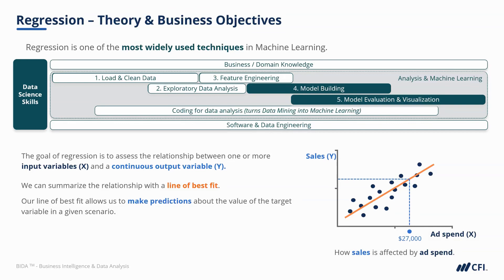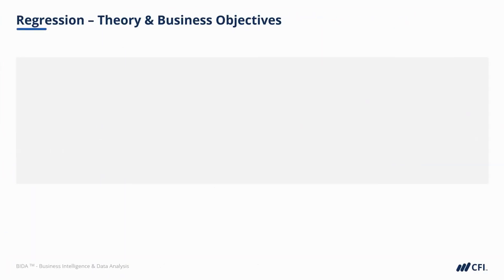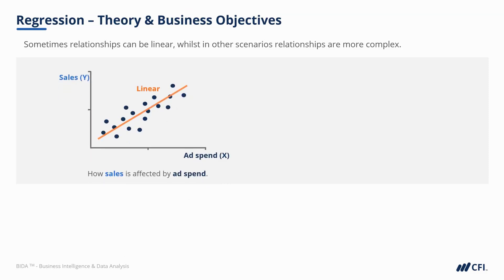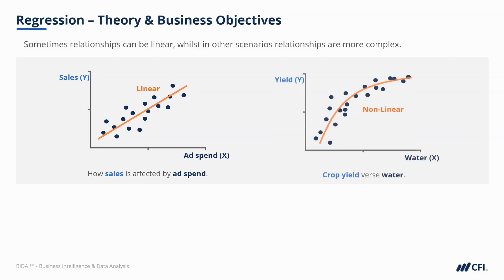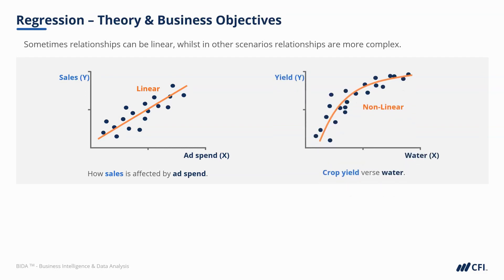The line of best fit allows us to make predictions about the value of a target variable in a given scenario. For example, with an ad spend of $27,000, our previous observations give us a line of best fit and we can predict likely sales. Not all scenarios are so simple though — sometimes relationships can be linear, but in other scenarios relationships are more complex, such as a non-linear relationship between the amount of water and the crop yield from a farm.